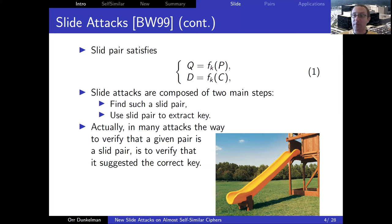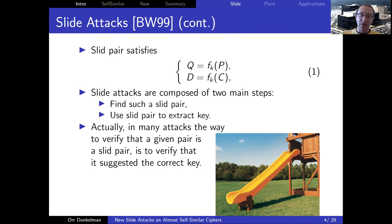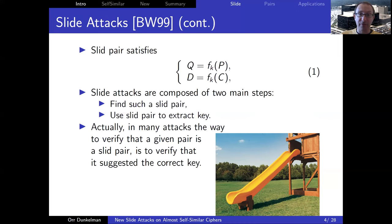There is one problem in most slide attacks: you take a pair without knowing whether it's a slide pair, extract the key, verify it, and then you know you found the slide pair. But in order to attack the scheme, you first need to find the slide pair; to find the slide pair, you need the key; and you know you found the right key only if you found the slide pair. There is an internal loop, and this is why many techniques were developed to mitigate this problem — and most of them work mostly for Feistels.